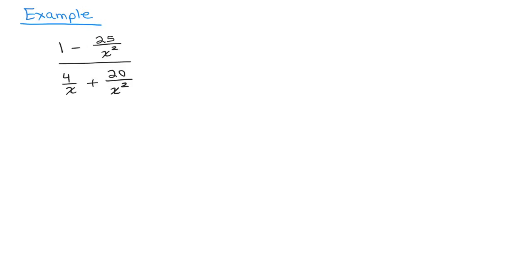There's an x and there's x squared. There's the different kinds of denominators. So the least common multiple is x squared. I'm going to multiply the numerator and denominator of the whole complex fraction by x squared, that way we'll be able to eliminate fractions.